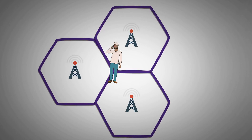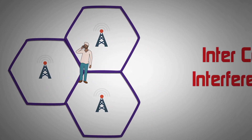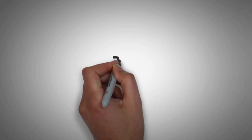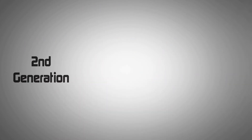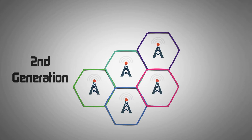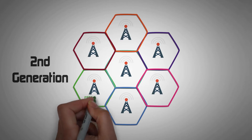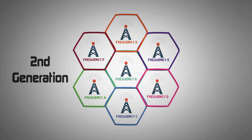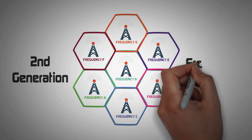In cellular communication, intercell interference has always been a major concern. In second generation communication, the operators divided the allocated bandwidth and cells in the vicinity use different frequencies to operate. The technique is popularly known as frequency reuse.